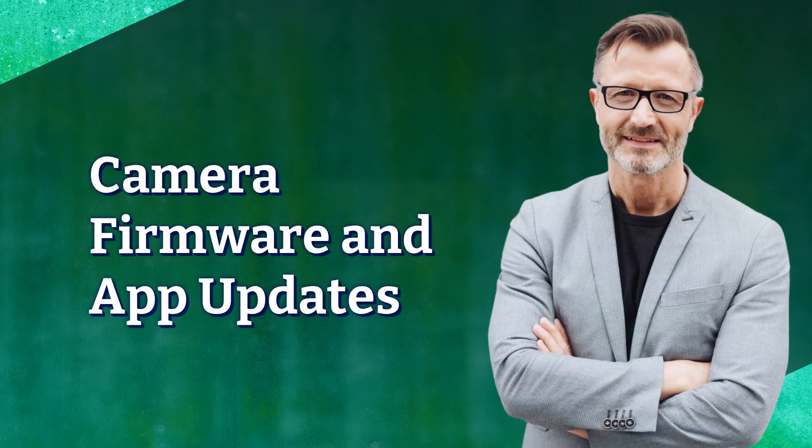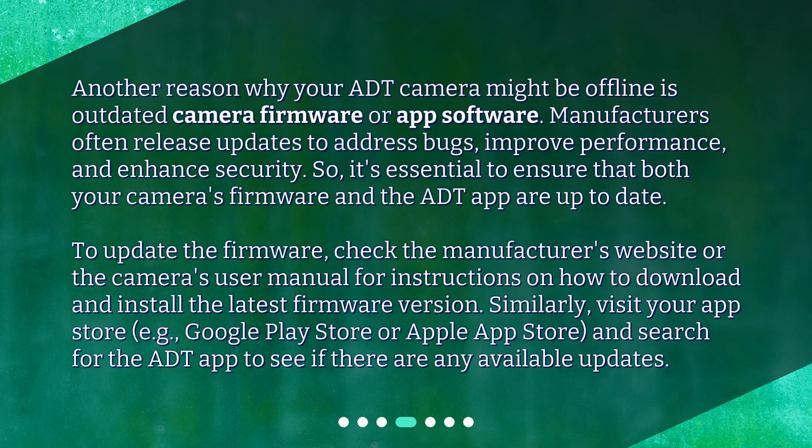Camera Firmware and App Updates. Another reason why your ADT camera might be offline is outdated camera firmware or app software. Manufacturers often release updates to address bugs, improve performance, and enhance security. So it's essential to ensure that both your camera's firmware and the ADT app are up to date. To update the firmware, check the manufacturer's website or the camera's user manual for instructions on how to download and install the latest firmware version. Similarly, visit your App Store — such as the Google Play Store or Apple App Store — and search for the ADT app to see if there are any available updates.